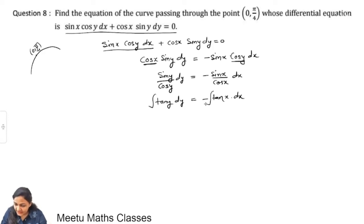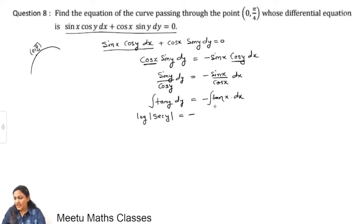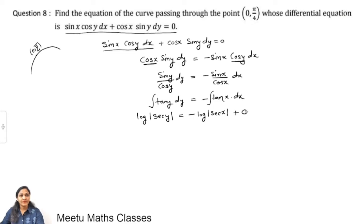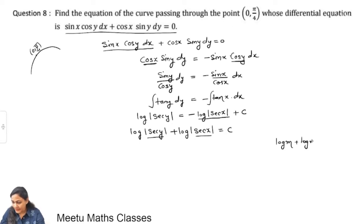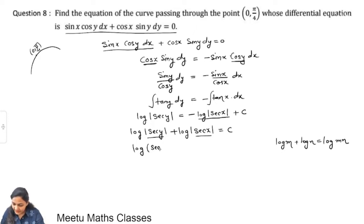Now, integrating both sides: the integral of tan y is log|sec y|, and the integral of −tan x is −log|sec x| + c. Shifting the log|sec x| term to the left-hand side gives: log|sec y| + log|sec x| = c. Using the logarithm property log m + log n = log(mn), this becomes: log|sec y · sec x| = c.